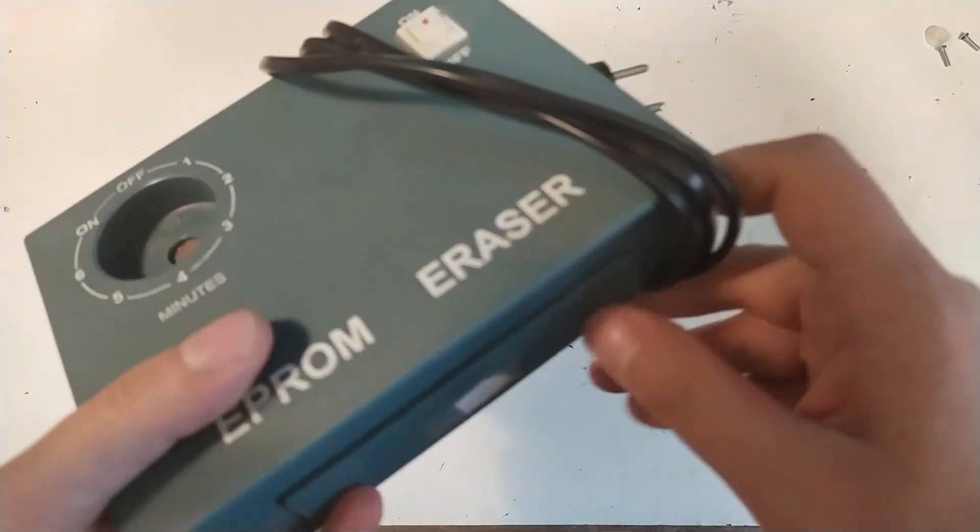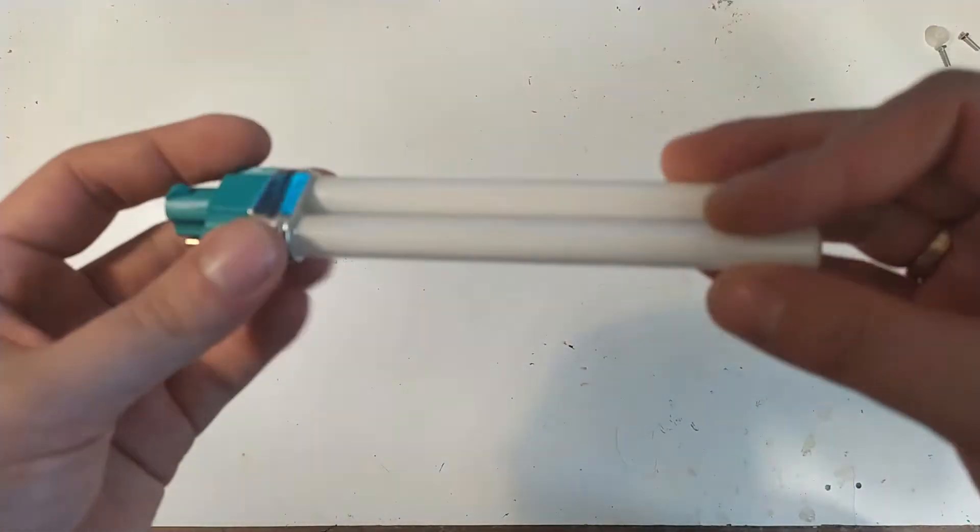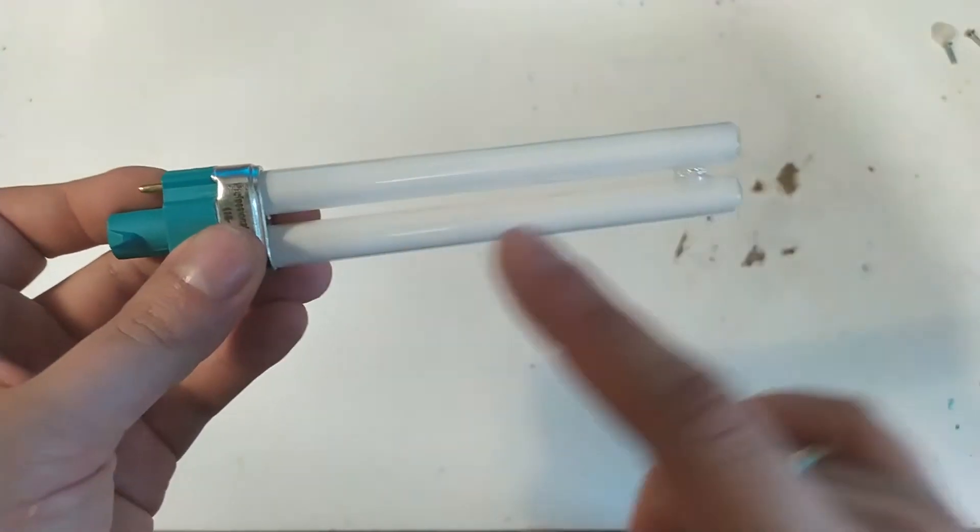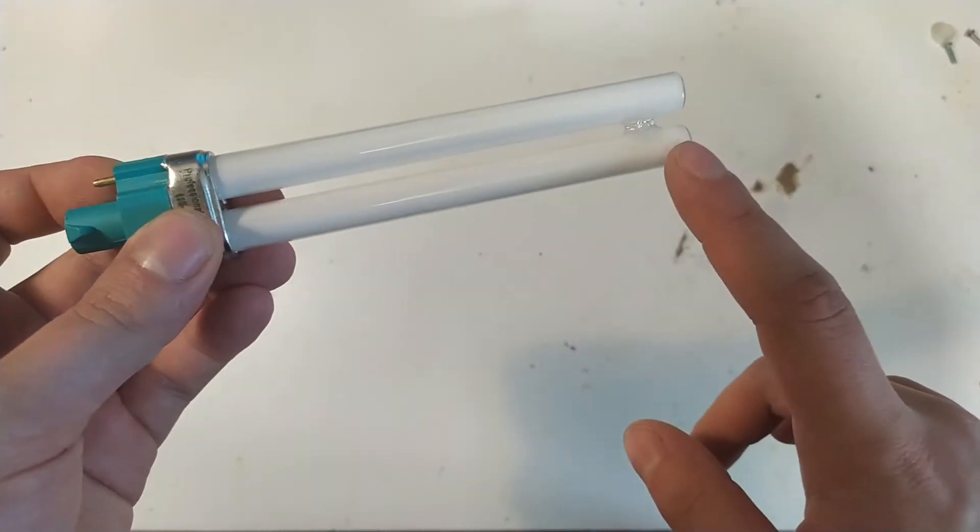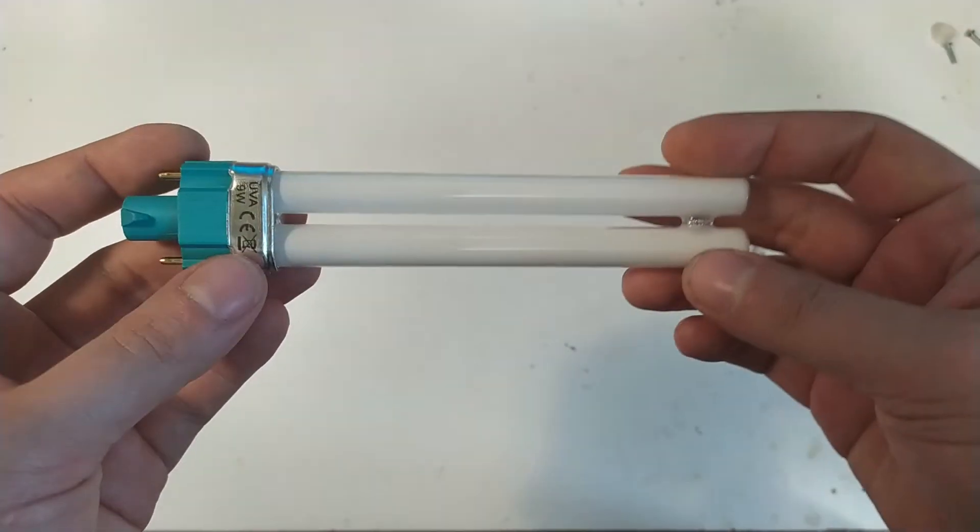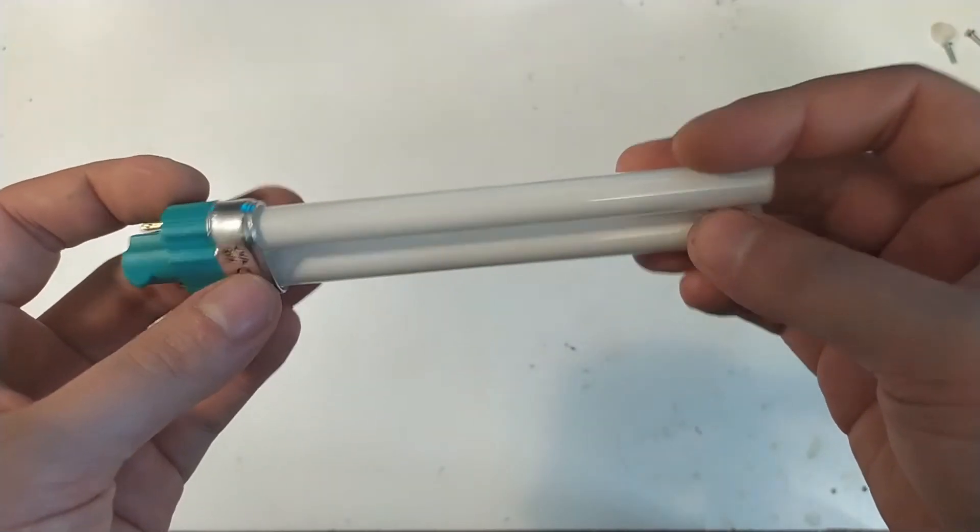So what we need is a larger UV exposure chamber of sorts. And I'd really like to use tubes like this. This is not the right kind of UV tube, you want the ones with the shorter wavelengths for this type of photoresist, and you can find those on the internet.